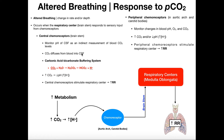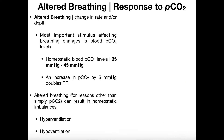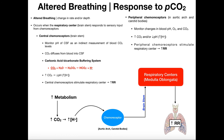When the central chemoreceptors sense elevated hydrogen ions, they send signals to the respiratory center in the medulla oblongata, which stimulates faster breathing and increased depth of breathing — increasing the respiratory rate. Remember that a change in pCO2 of just five millimeters of mercury is enough to double the respiratory rate. So if you do a sprint down the street, you have a high metabolic rate in your skeletal muscles, they're generating a lot of carbon dioxide. By this equation, when you have high carbon dioxide, you have high hydrogen ions.